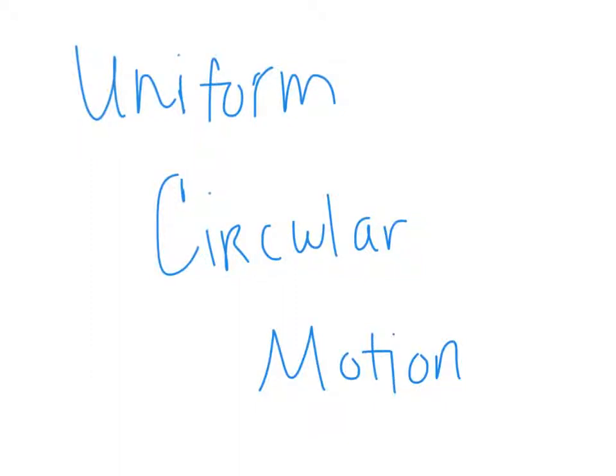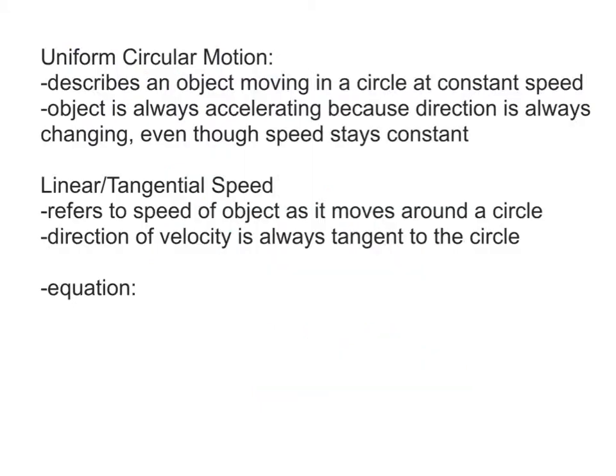Uniform circular motion refers to motion in a circle. We'll spend the next couple of weeks dealing with problems with objects moving in circles. I'm going to start by giving you a few definitions relative to circles, and then we'll get into some examples on how to solve problems dealing with uniform circular motion. Uniform circular motion is simply an object moving in a circle at a constant speed — that's where the 'uniform' comes in.